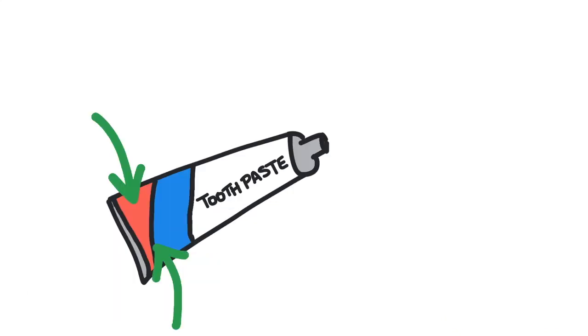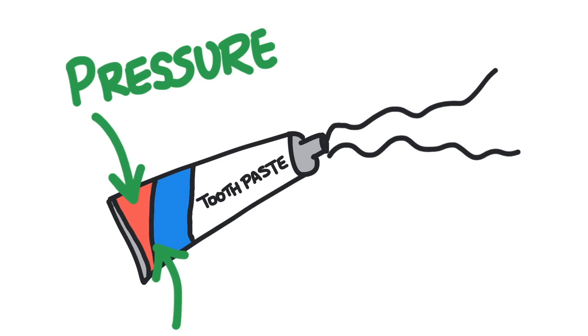When you squeeze the end of a tube of toothpaste, the toothpaste comes out the open end, and there's a scientific principle for why this happens. When you squeeze the tube, you apply pressure to the fluid inside, the toothpaste, and that pressure gets transmitted through the toothpaste until it emerges from the open end.